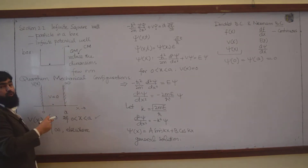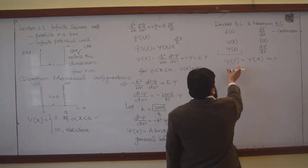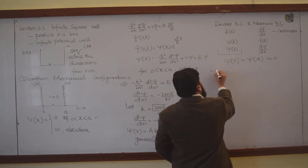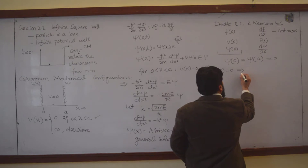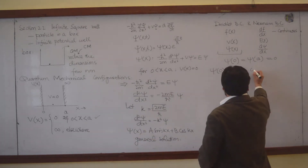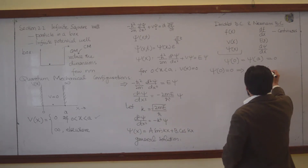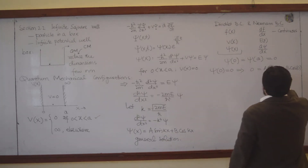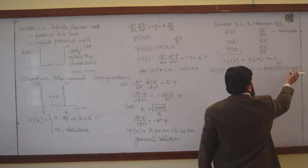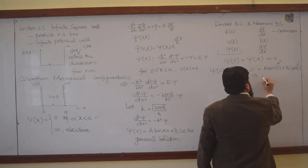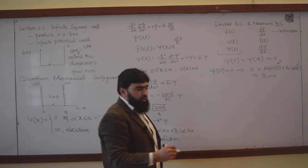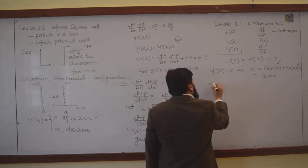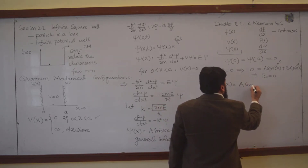The particle will exist in between the walls and is free to be there. So we have psi(0)=0 and psi(a)=0. Applying the first condition, psi(0)=0 implies 0 = A sin(0) + B cos(0). Since sin(0)=0 and cos(0)=1, this gives B=0.